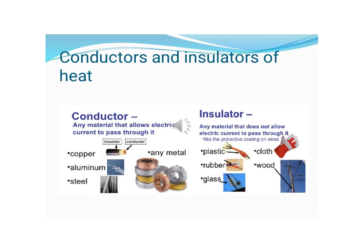Materials which do not allow heat to pass through them are called bad conductors of heat, or insulators. Examples include paper, wood, leather, clothes, brick, mud, and some air and water. Most liquids and gases are also bad conductors.